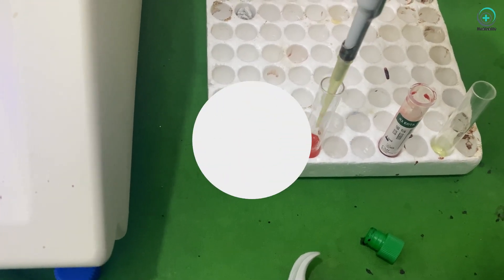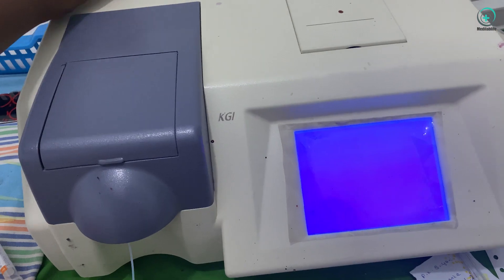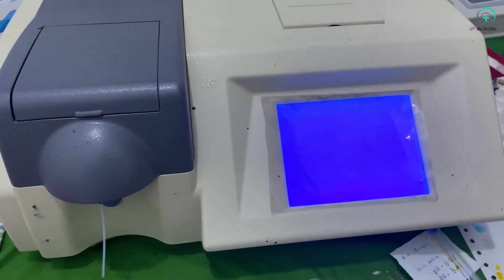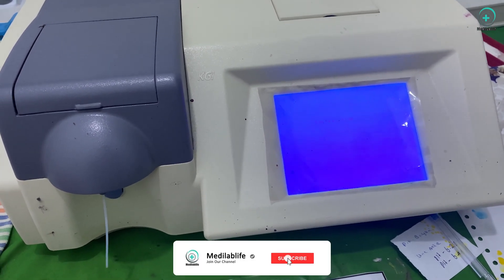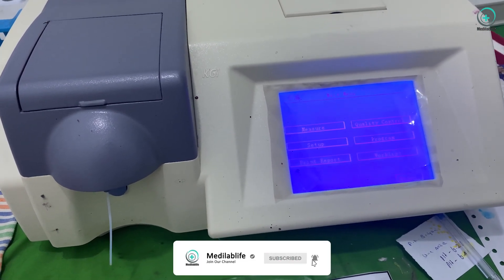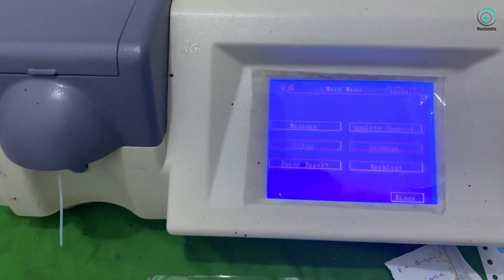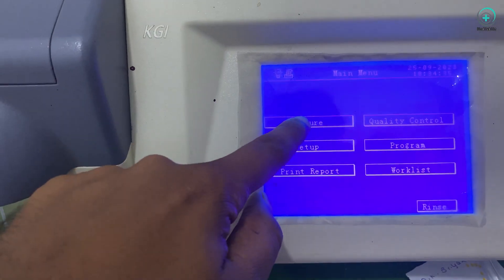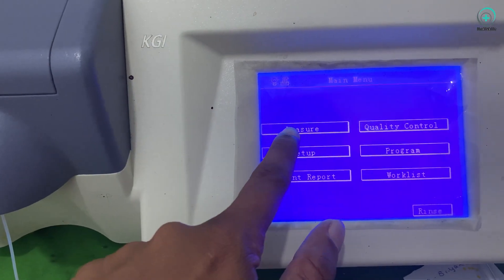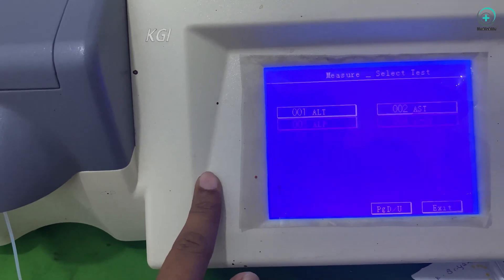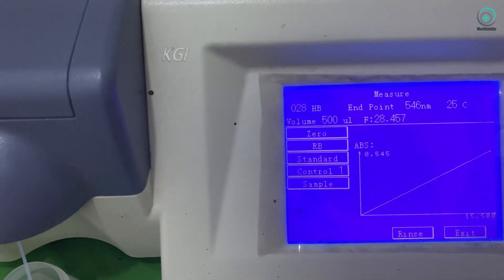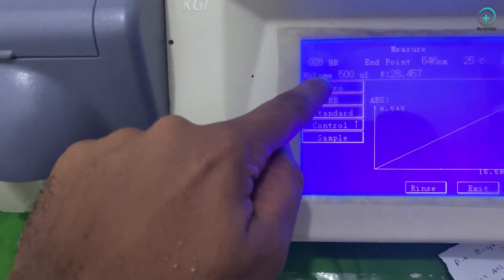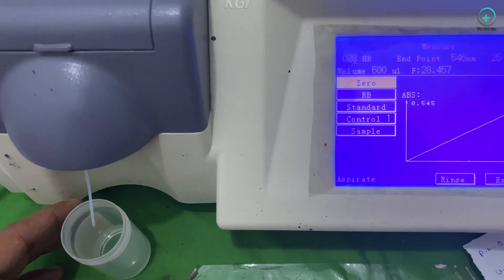Step 4: Setting up the biochemistry analyzer. Select the hemoglobin program on the biochemistry analyzer. Zero the analyzer using distilled water and micropipettes for precision.